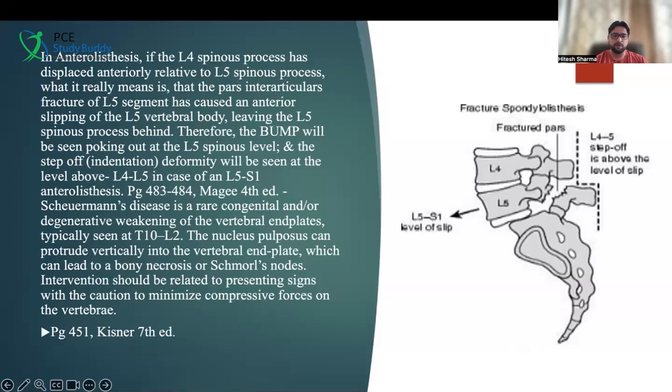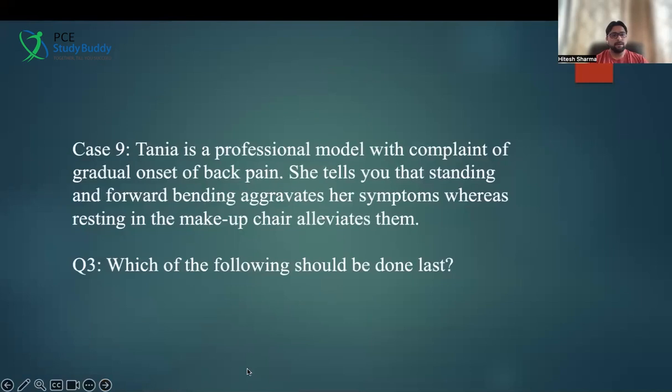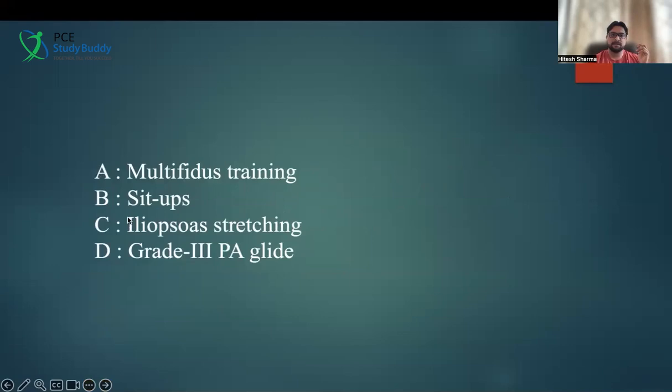We'll solve the third question in the same vignette. The vignette is the same: professional model complaining of pain. Question three asks: which of the following should be done last? For this kind of question where you cannot pre-determine the answer, the best thing is to go to the options. The options are: multifidus training, sit-ups, iliopsoas stretching, or grade 3 PA glide. Which of the following should be done last?